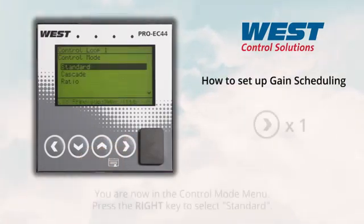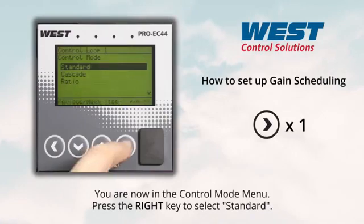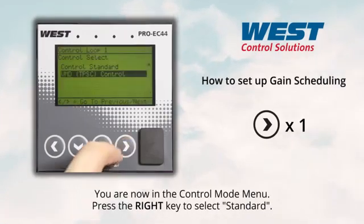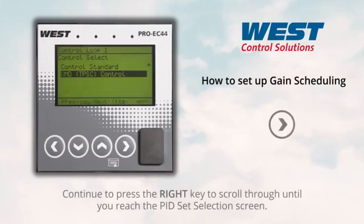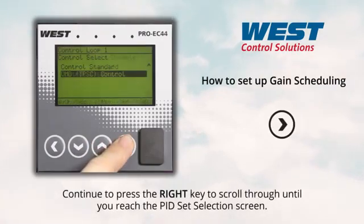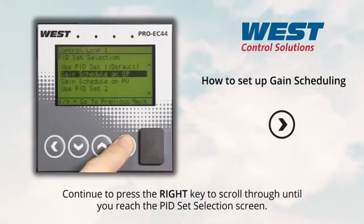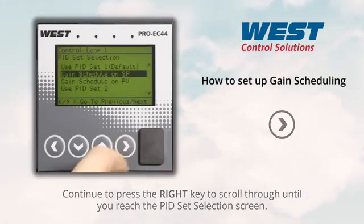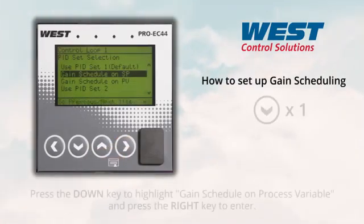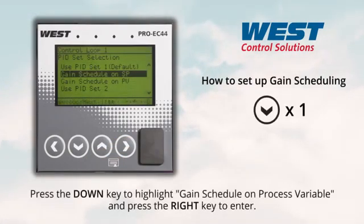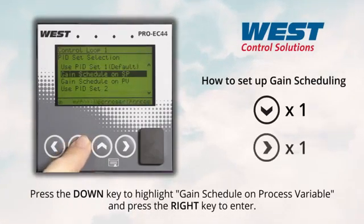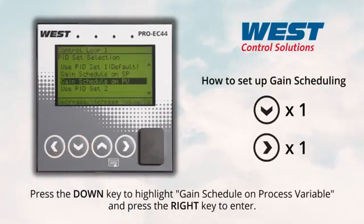You are now on the control mode menu. Press the right key to select standard. Keep pressing the right key to scroll through until you reach the PID set selection screen. Press the down key to highlight gain schedule on process variable, then press the right key to enter.